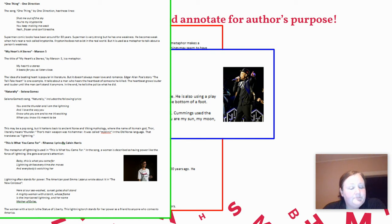Lightning also stands for power. The American poet, Emma Lazarus, wrote about it in The New Colossus. Here at our sea-washed sunset gates shall stand a mighty woman with a torch whose flame is the imprisoned lightning in her name, Mother of Exiles. The woman with the torch is the Statue of Liberty. This lightning torch stands for her power as a friend to anyone who comes to America.